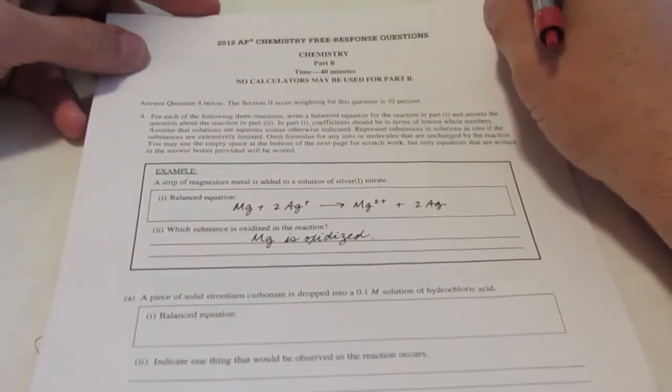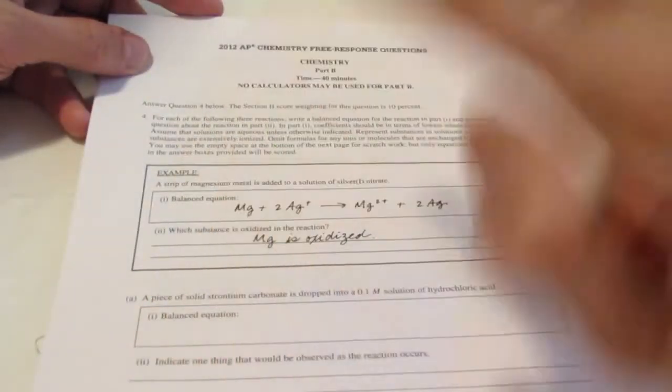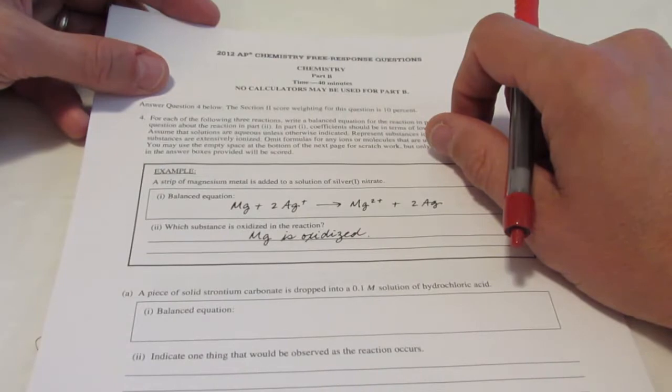Welcome back kiddos. We're going to work on the free response section of the AP exam, question 4 in particular. This is known as the equation section. There are three equations. This section is worth 15 points.